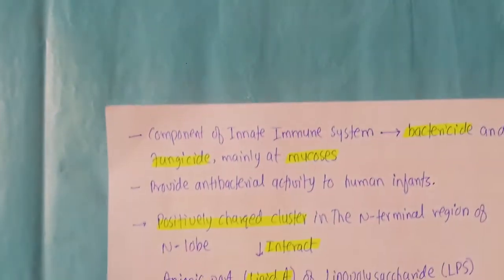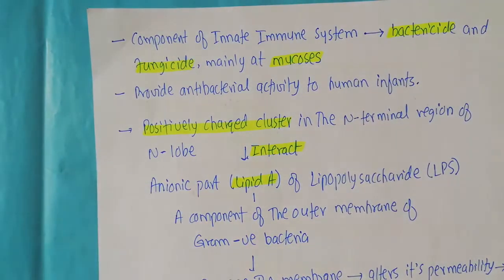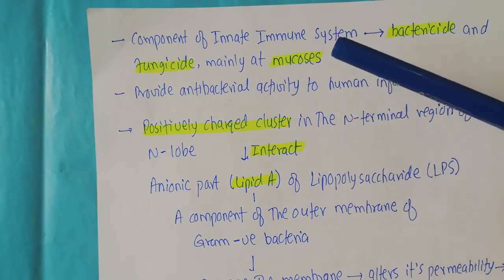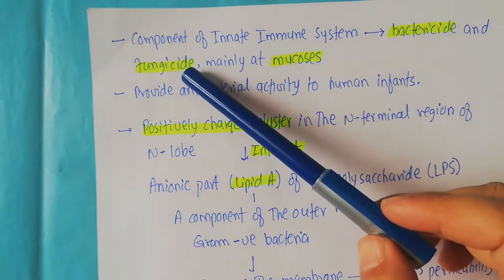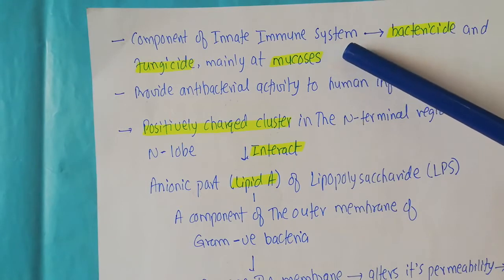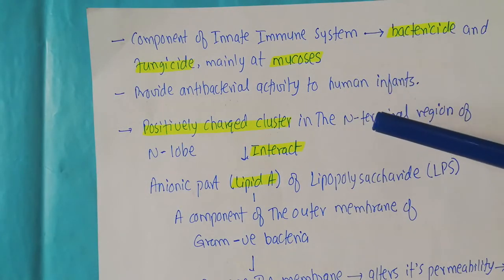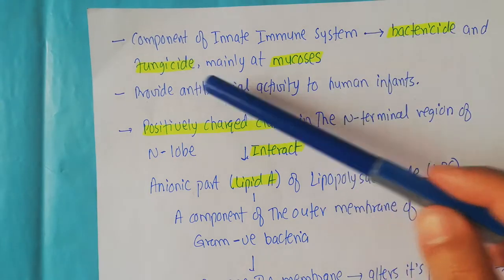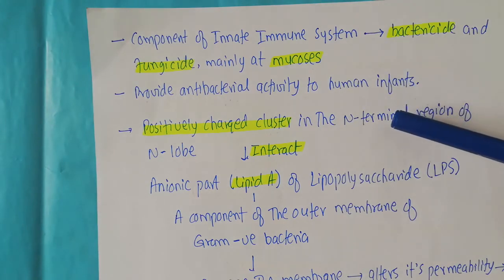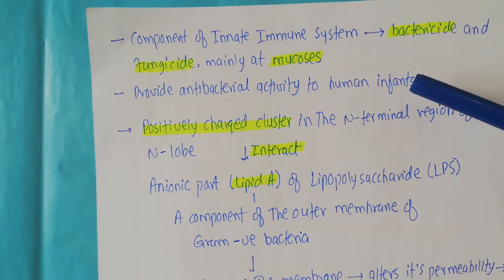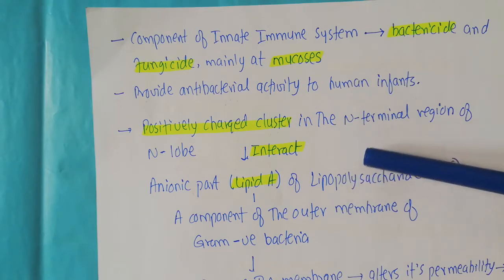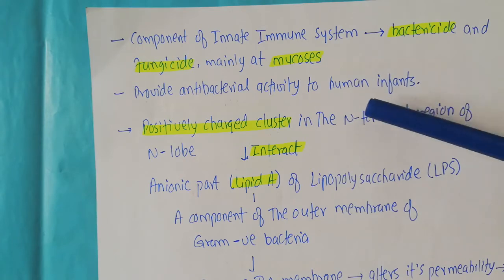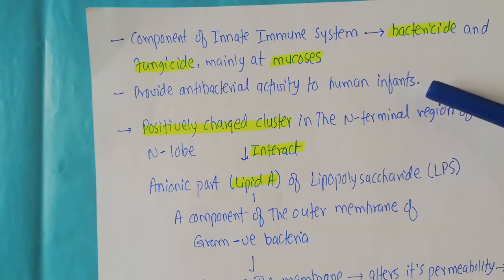Lactoferrin is a component of the innate immune system — the general immune system found in the human body. It has bactericidal and fungicidal activity mainly at the mucosae, meaning the linings of the internal organs. Lactoferrin also provides antibacterial activity to human infants, because when infants are born they have a weak immune system. When the infant takes human colostrum, which contains lactoferrin, it provides antibacterial protection to the infant.